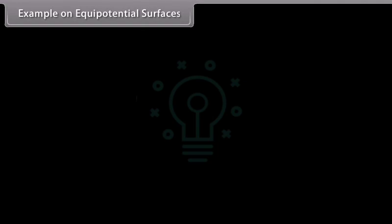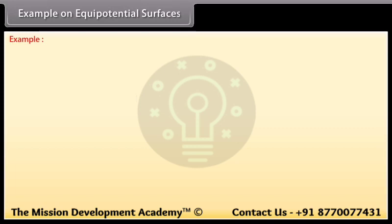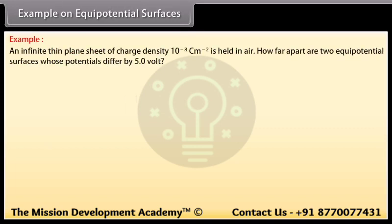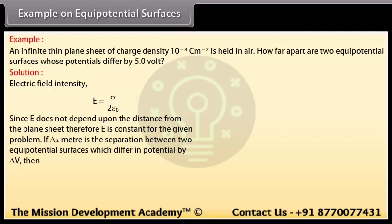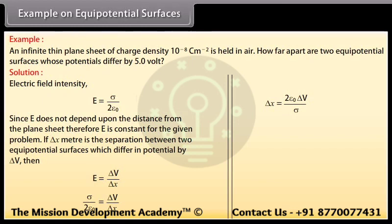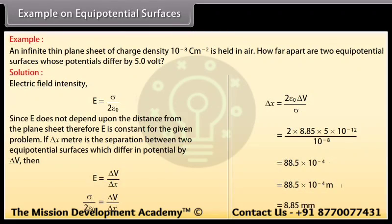Example on equipotential surfaces: An infinite thin plane sheet of charge density 10⁻⁸ C/m² is held in air. How far apart are two equipotential surfaces whose potentials differ by 5 volts? The electric field intensity E = σ/(2ε₀). Since E does not depend on distance from the plane sheet, E is constant. The separation δX between the two equipotential surfaces is δX = 2ε₀·δV/σ. Substituting values, δX = 8.85 mm.